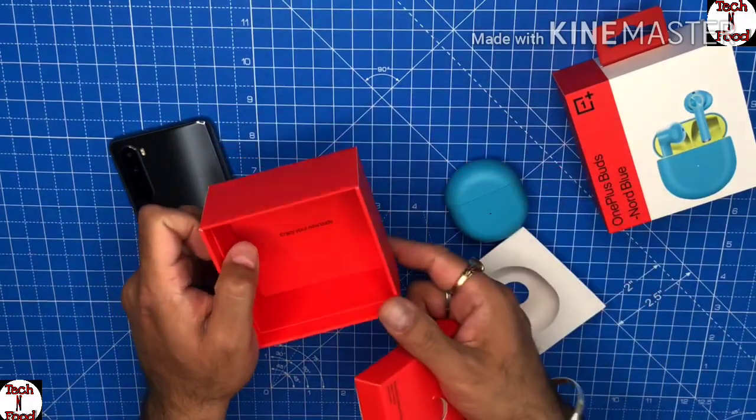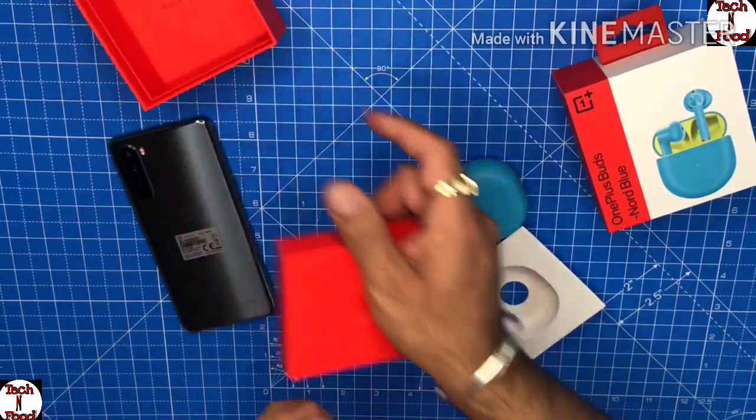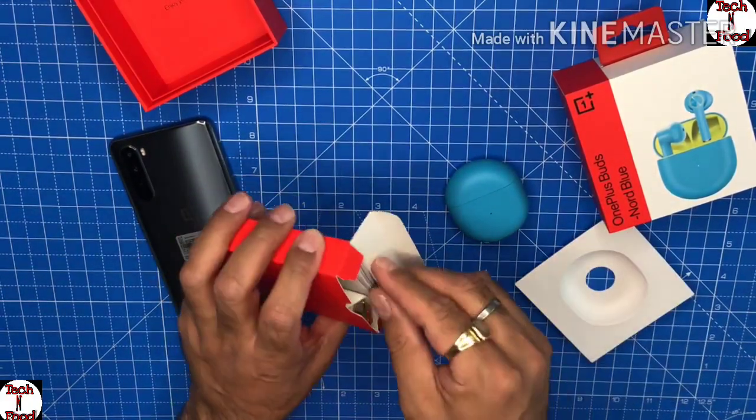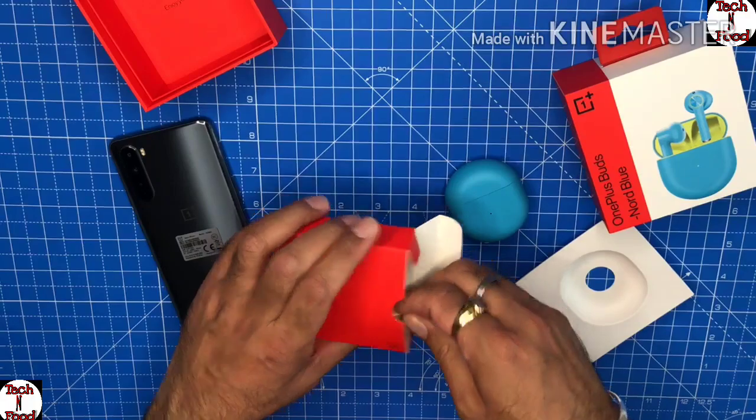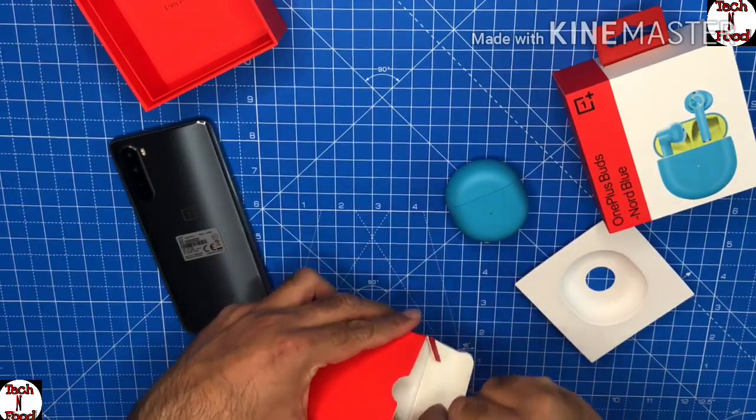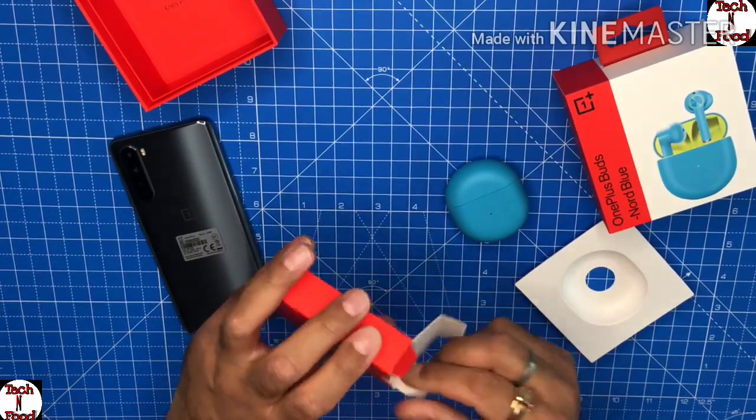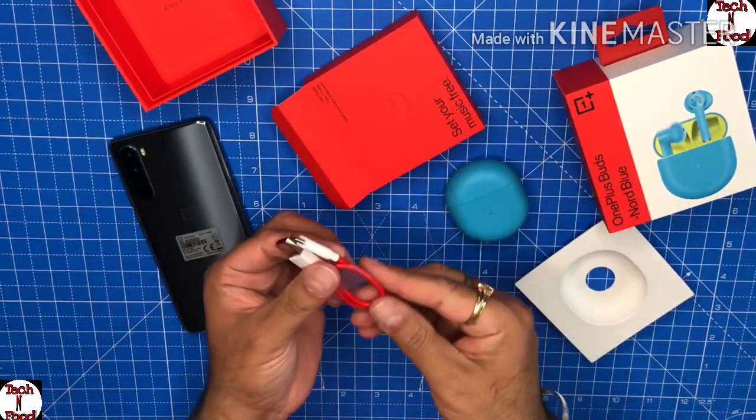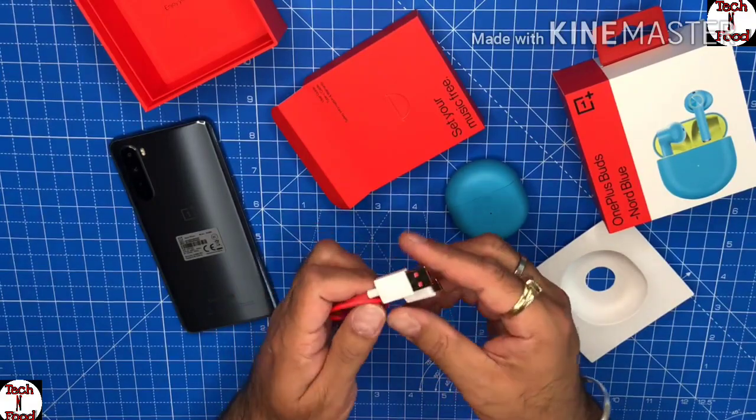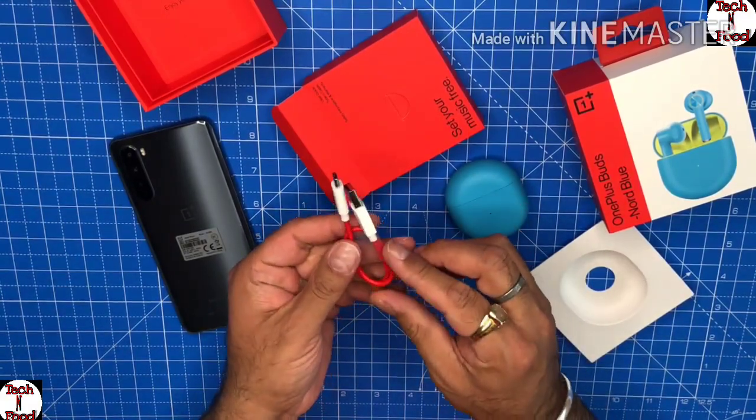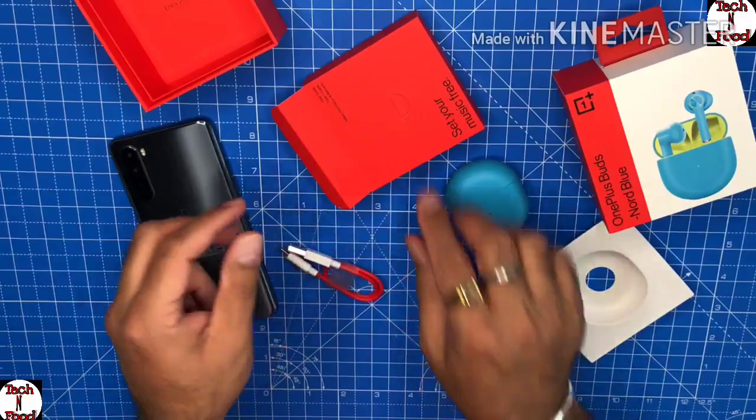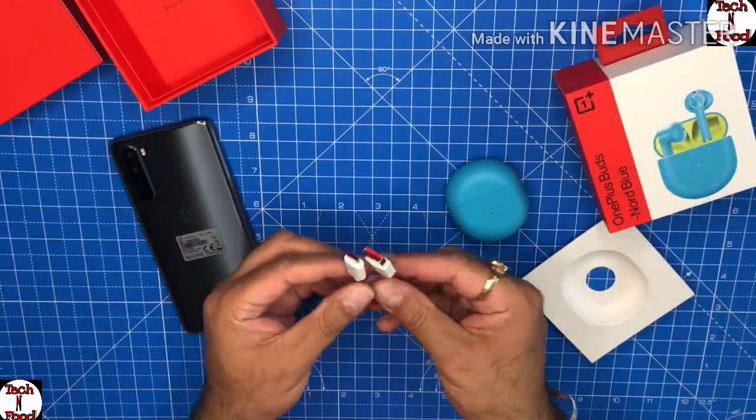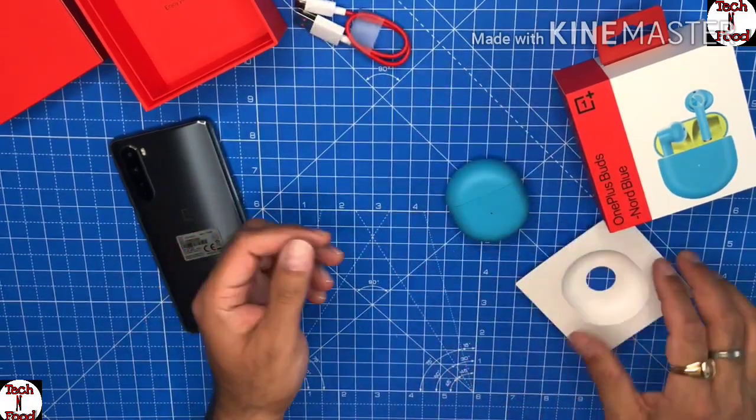Small little box, it says 'Enjoy your new buds.' We got a USB Type-C charging cable in typical signature red and white from OnePlus, some user guide. That's the charging cable, alright.